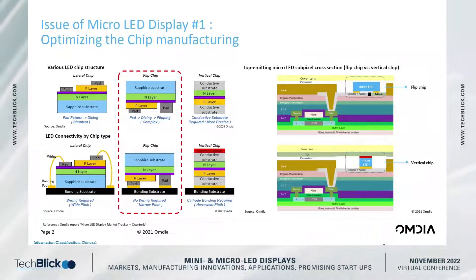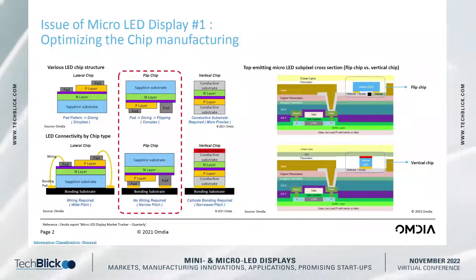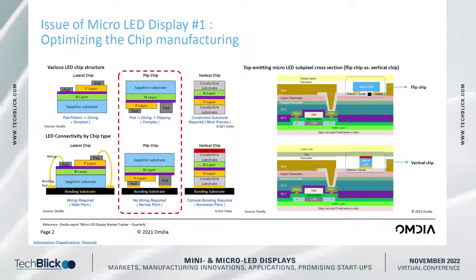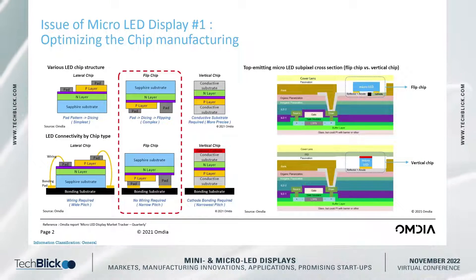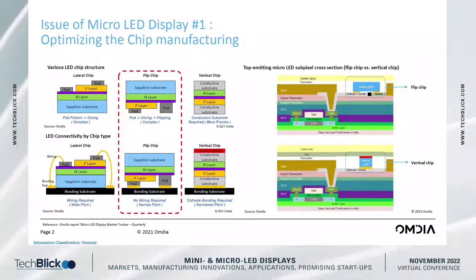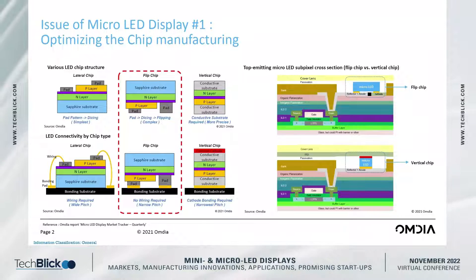As you can see in the right side figures, when display manufacturers use the flip chip, they don't need another common cathode process. But if the vertical chip is used on the display, there should be an additional common cathode process for the micro LED. This will be a burden for the manufacturers.